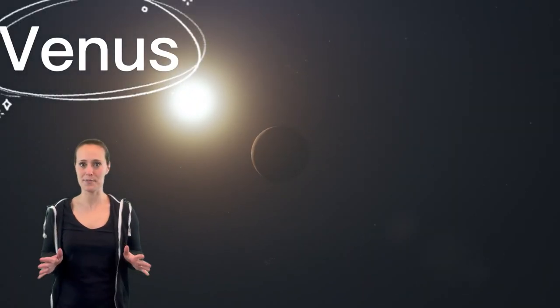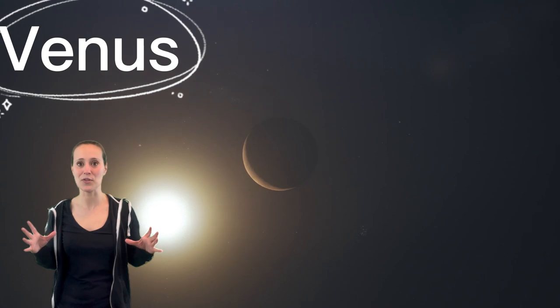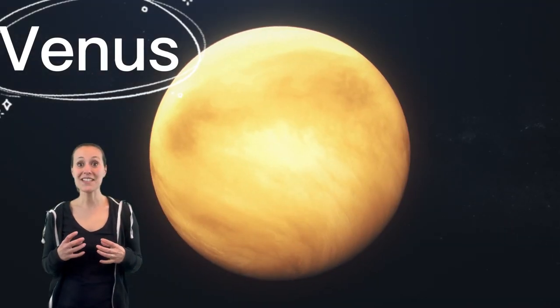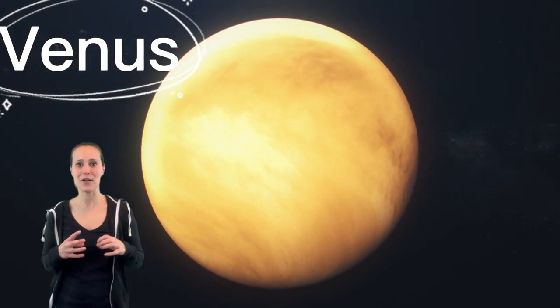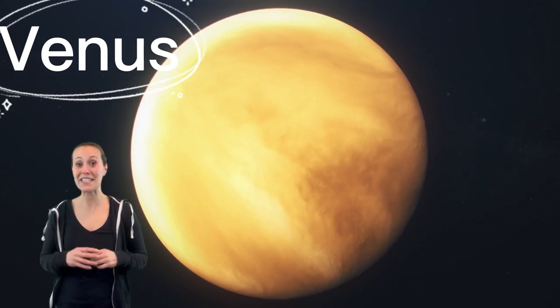Venus is the hottest planet in our solar system. It has an atmosphere of thick clouds, and the clouds hold in that heat. The sun's light reflects off Venus's clouds, so it looks really bright. In fact, it's the brightest planet we can see in the sky.